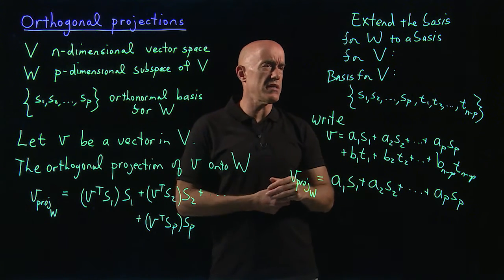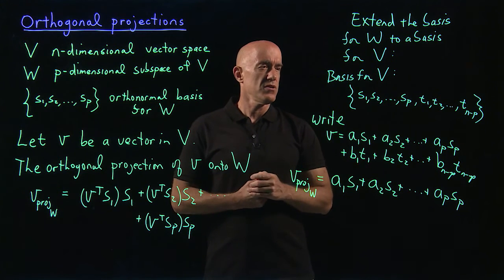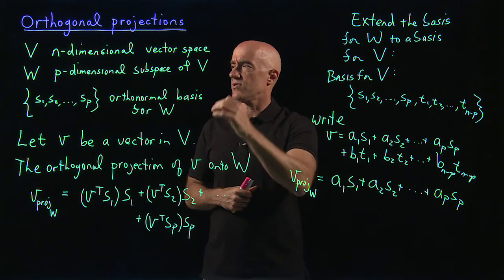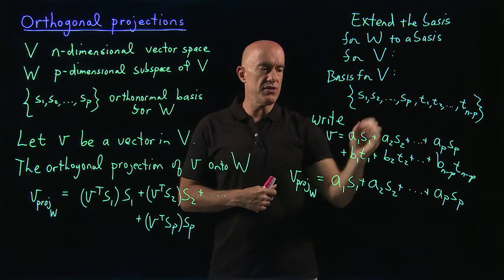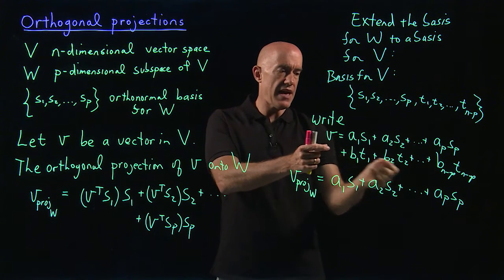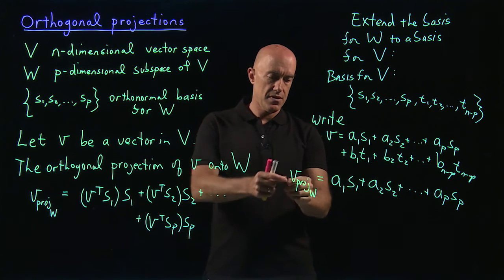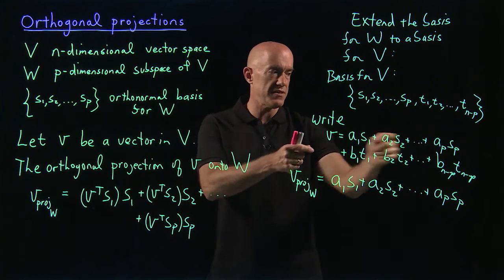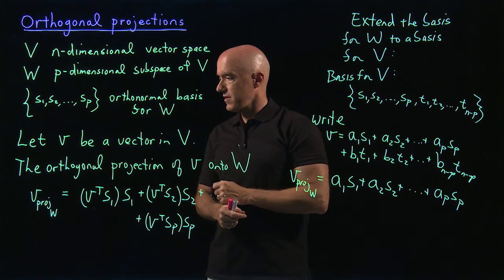The second formulation is easiest to understand: the orthogonal projection of a vector v in capital V is just the piece of the vector v that lies in W — the piece that's in W, which consists of the basis vectors of W.